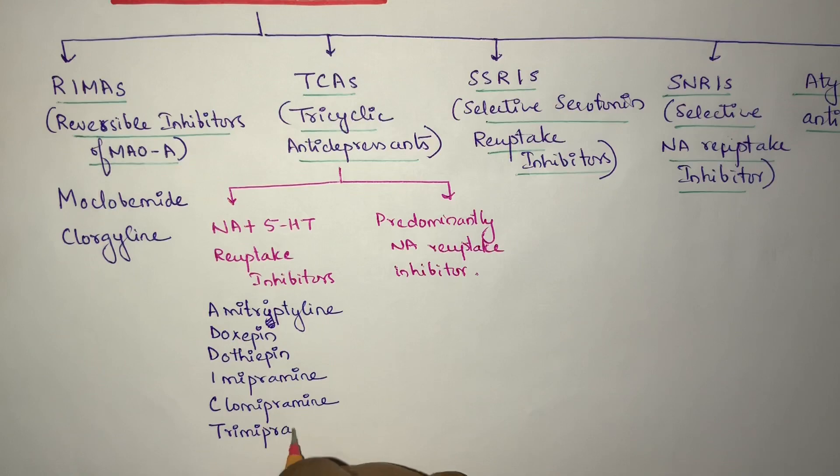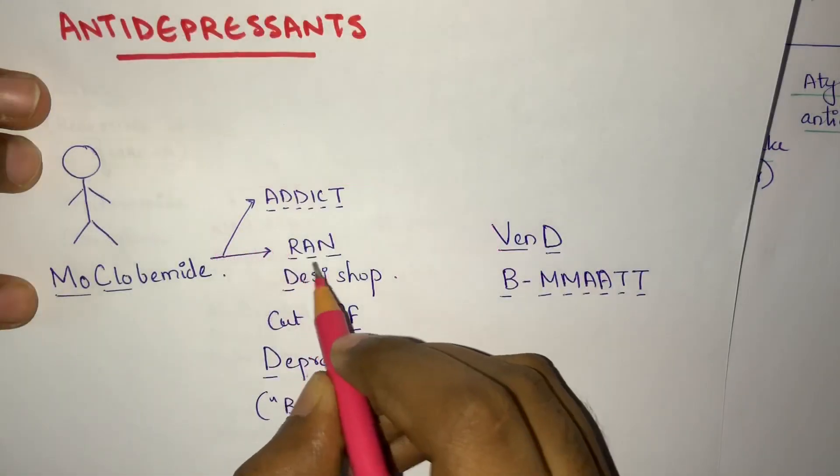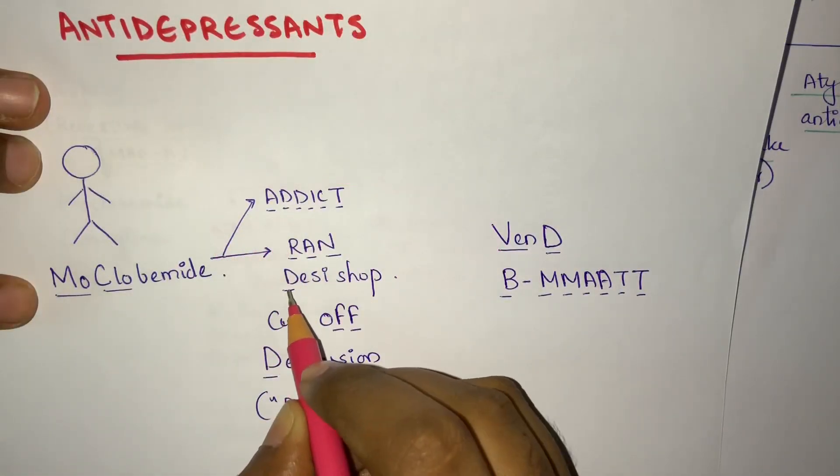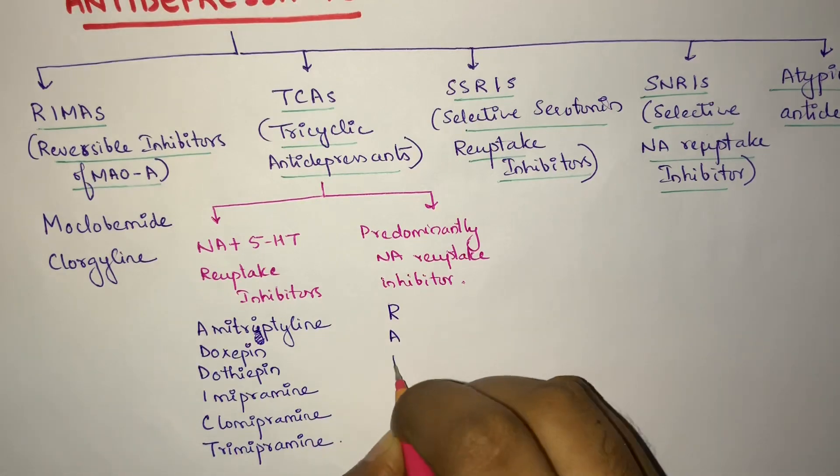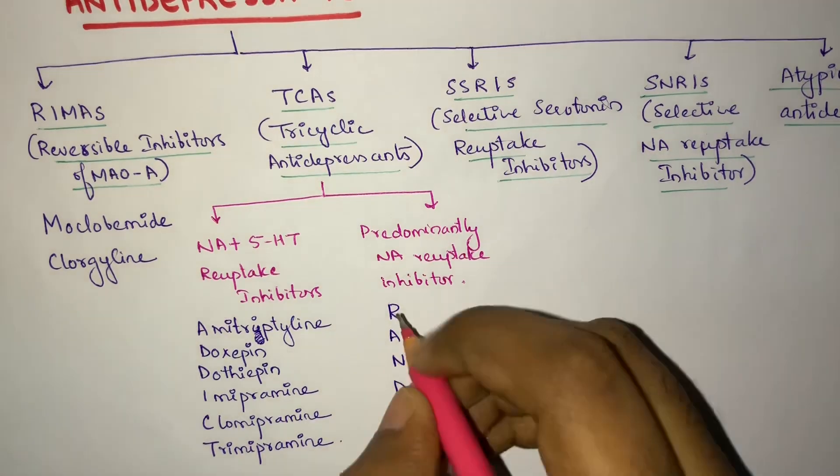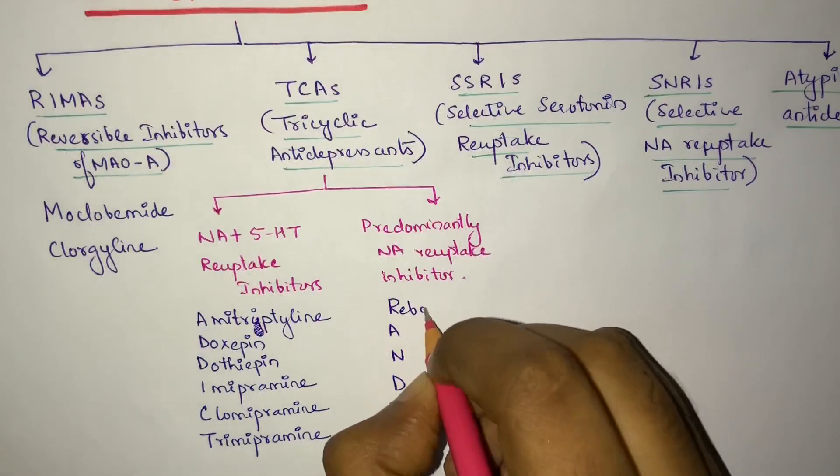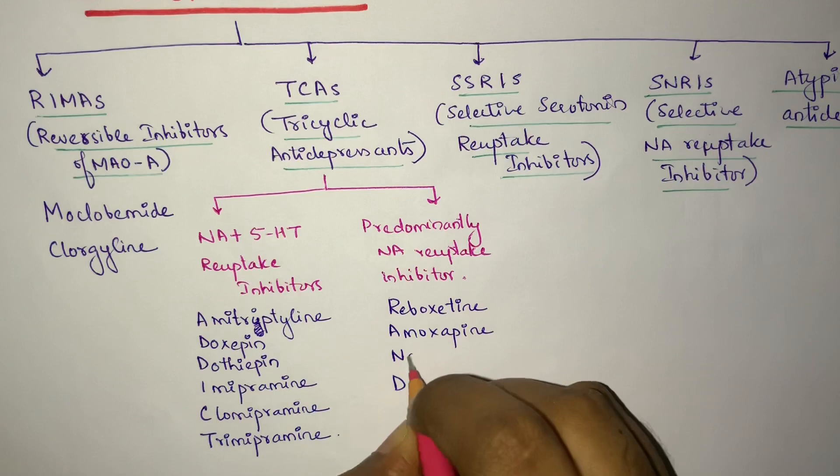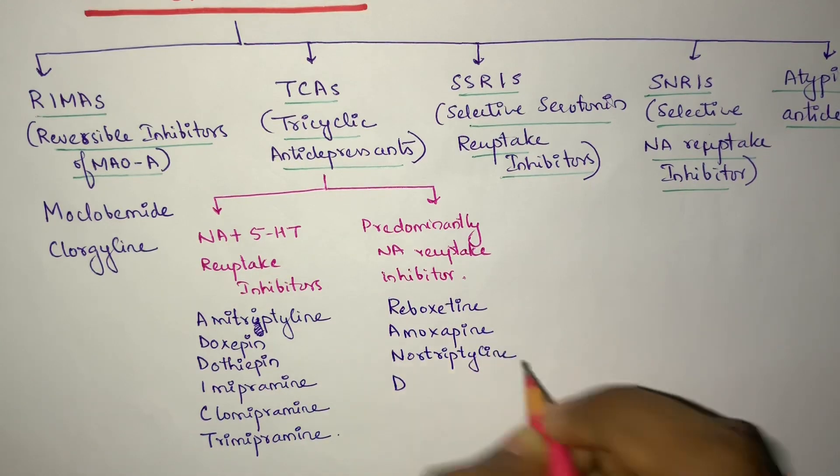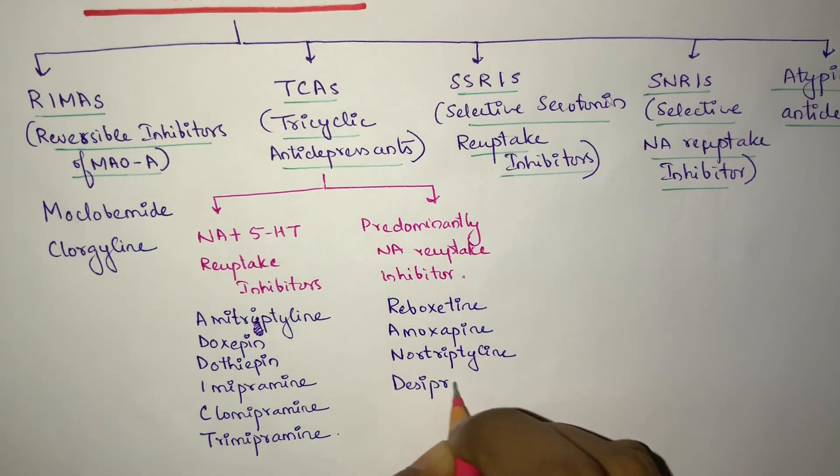Then is RAND. These are the predominantly noradrenaline reuptake inhibitors. R-A-N-D. R is for Reboxetine, A for Amoxapine, N for Nortriptyline, and D is for Desipramine.